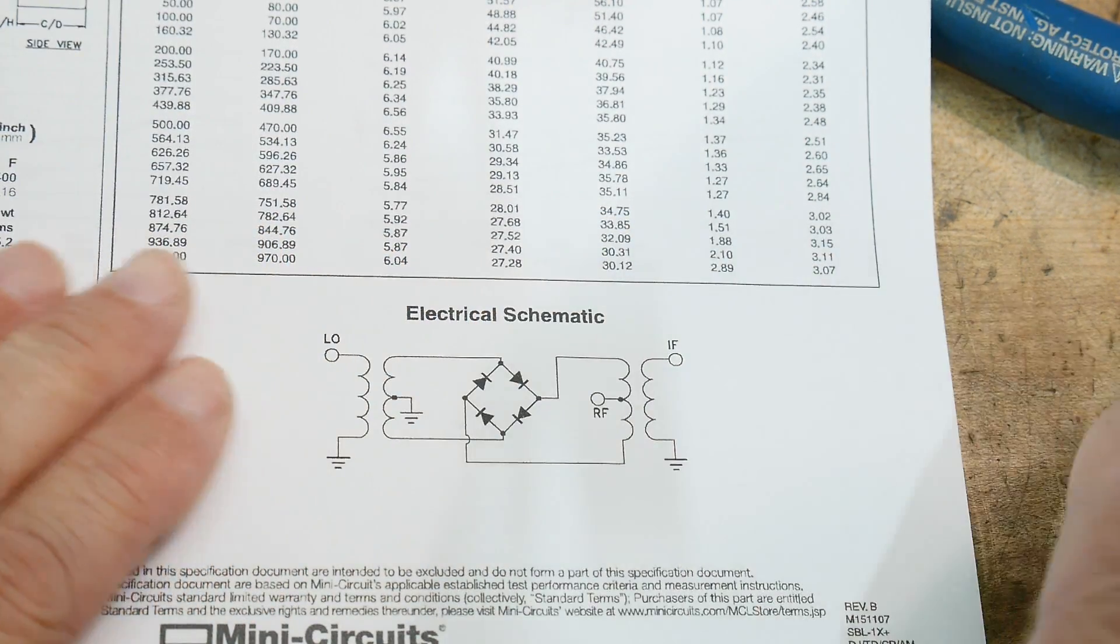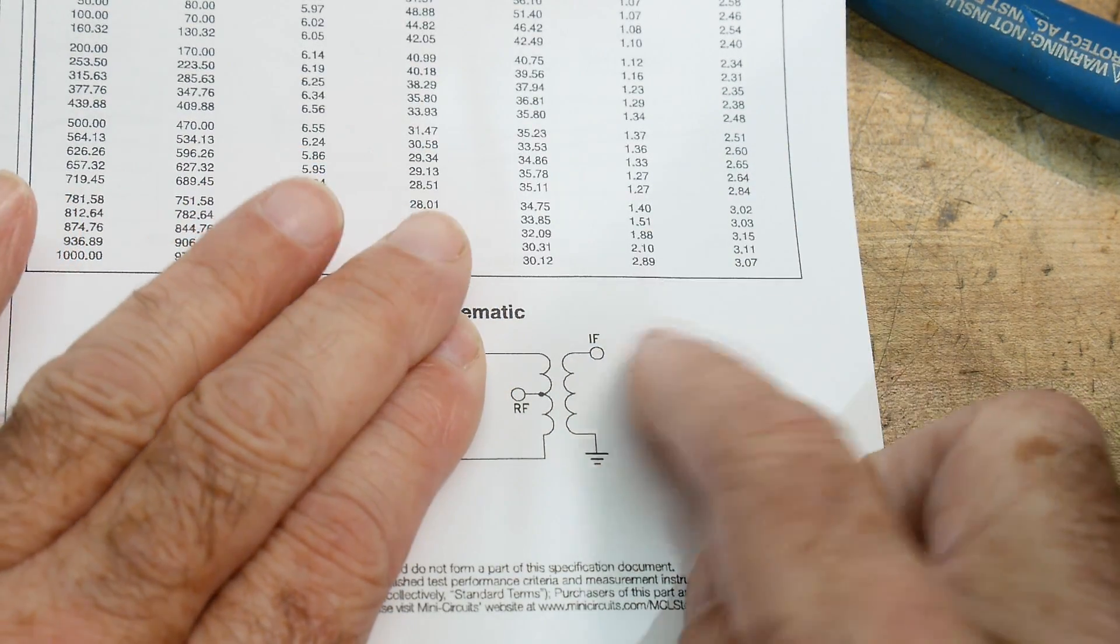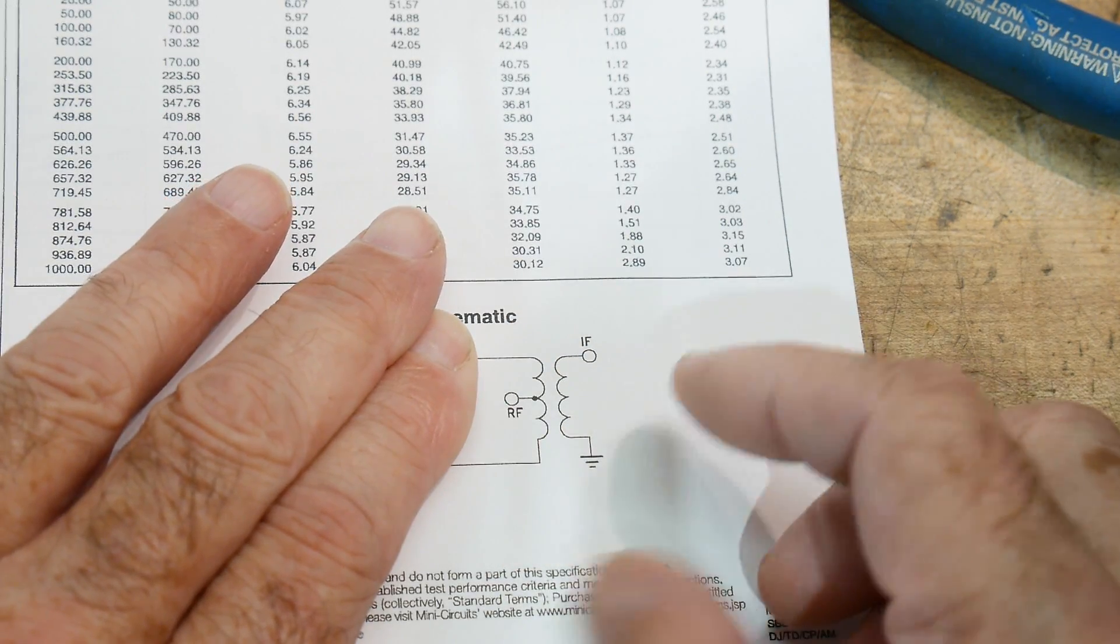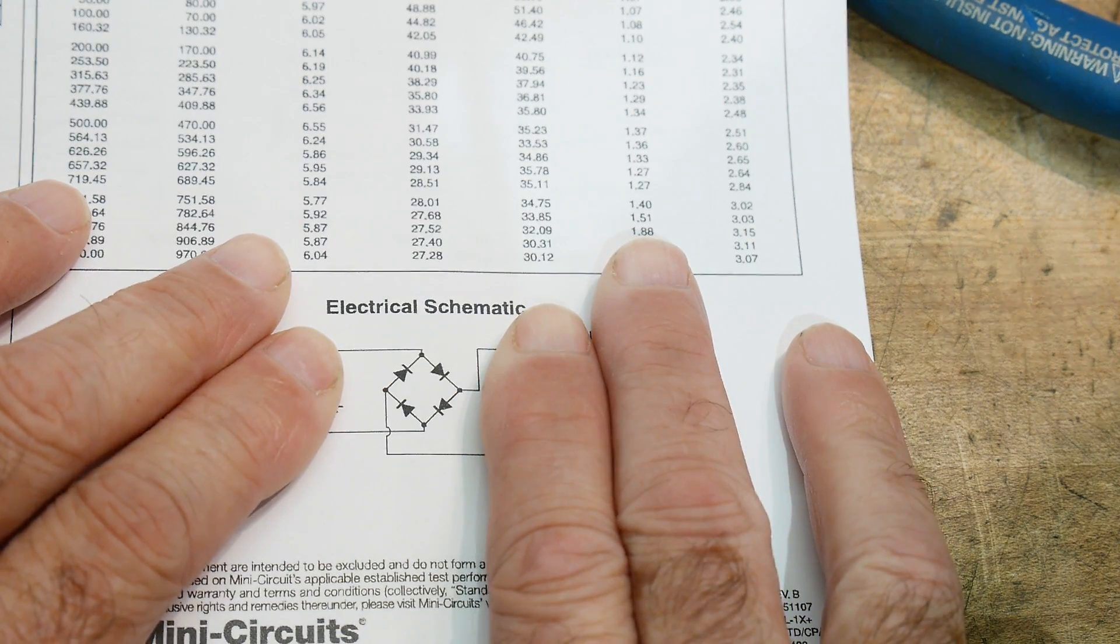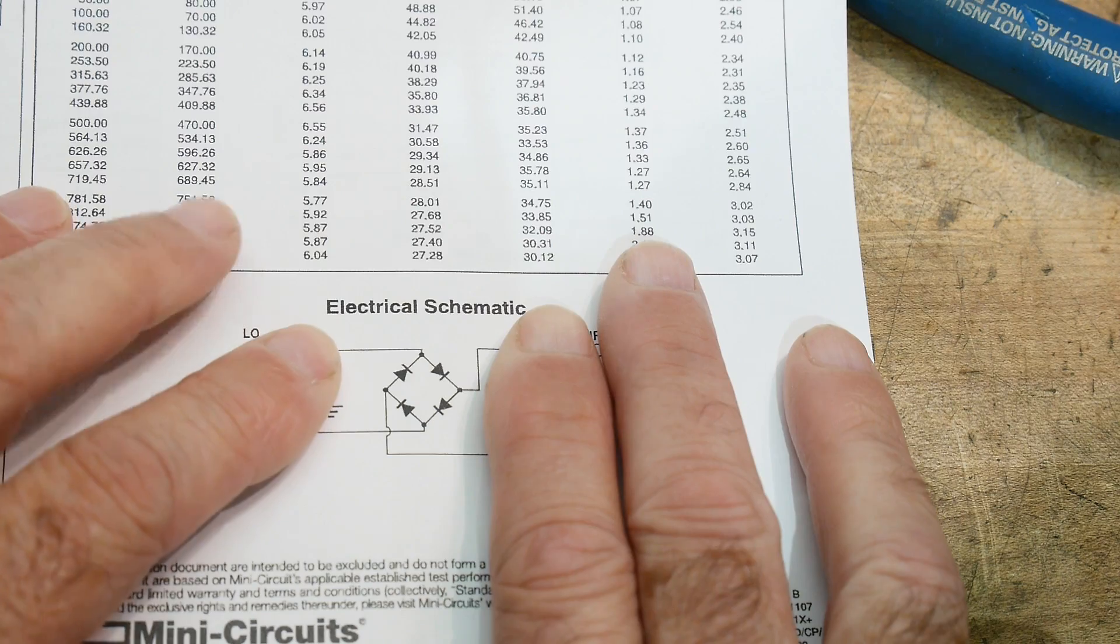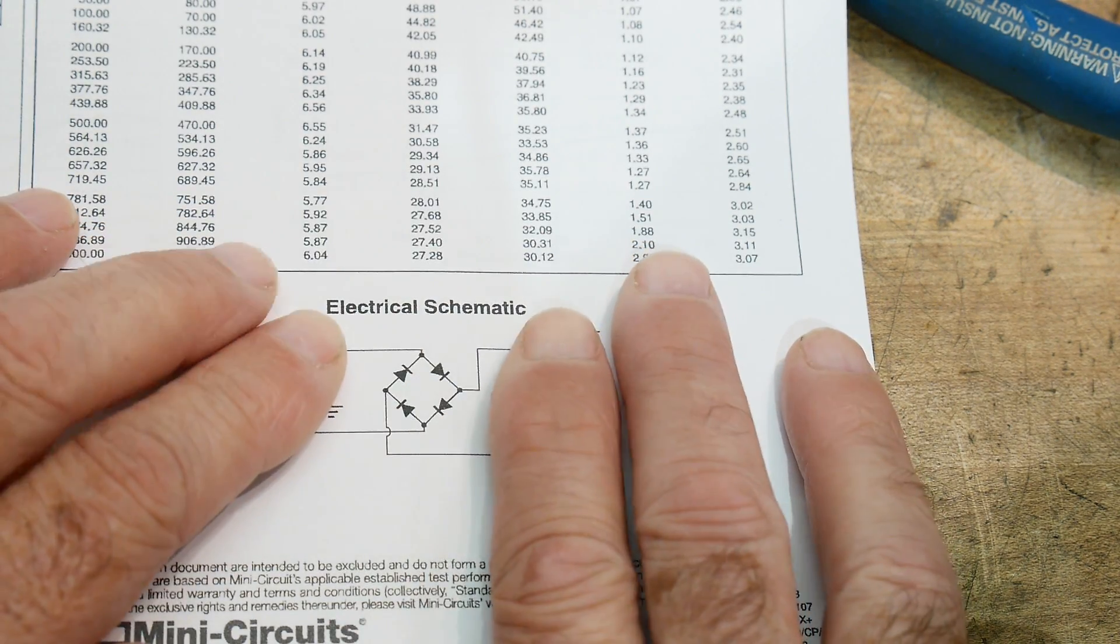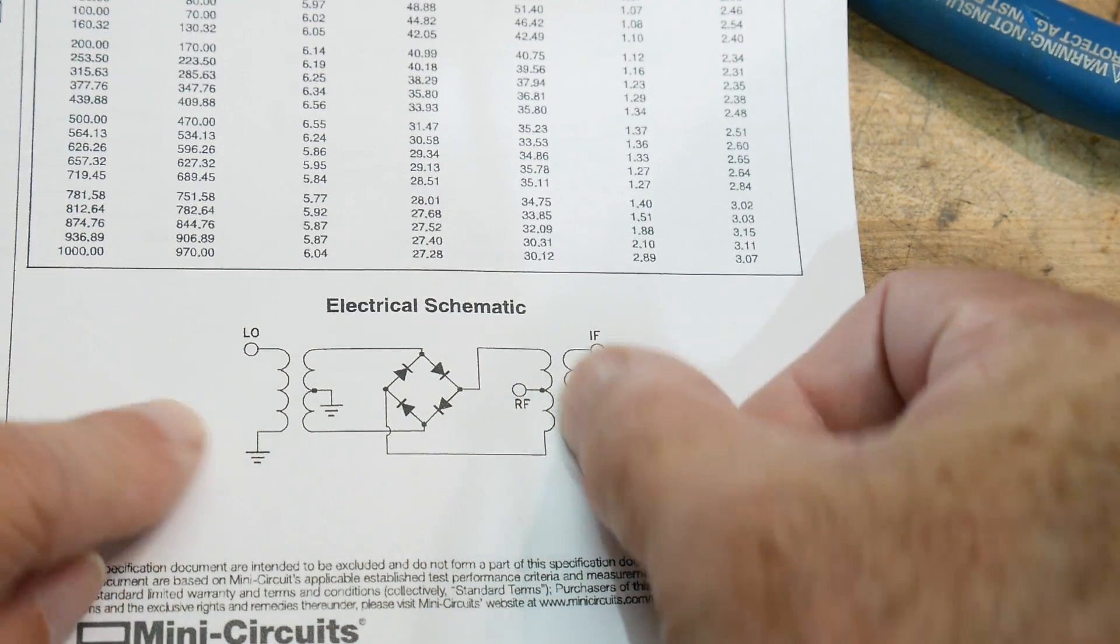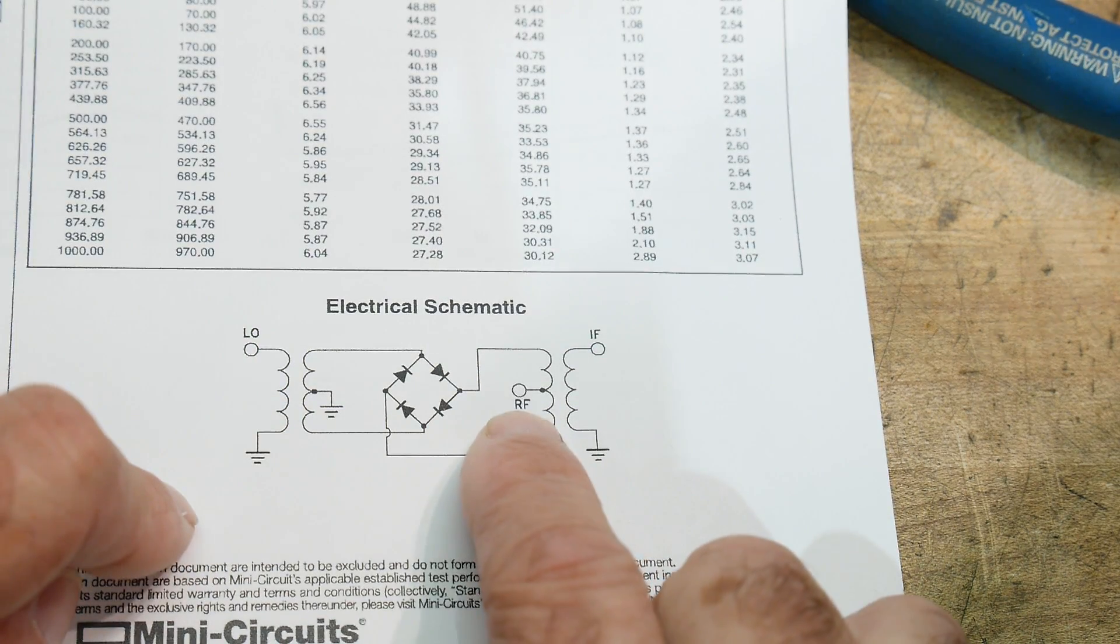And then over here we have the same thing. We have an output this time, but it goes from balanced to unbalanced this time. And then we have this, I think it's called a ring modulator or a diode modulator. I'm probably going to get it wrong, but they've got the little Schottky diodes in here to do the modulation.